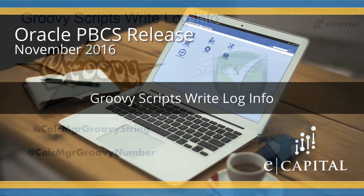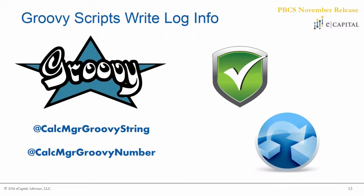The next piece here is actually also related to business rules a little bit. This is around Groovy scripts and the ability to write log info to the job console. You're probably asking yourself, what are Groovy scripts? I'll be honest, I don't have a whole lot of experience with Groovy scripting myself, but Groovy scripting is a newer language, similar to Jython or Ruby, and it really opens up a bunch of new possibilities for an Oracle developer. I'll give some background on the way you can leverage Groovy scripting with PBCS business rules first, and then just kind of talk about the logging update.